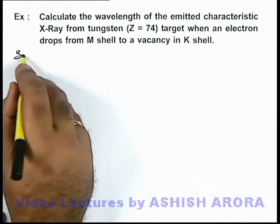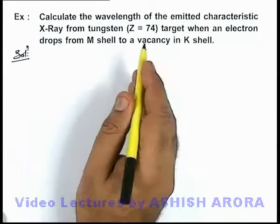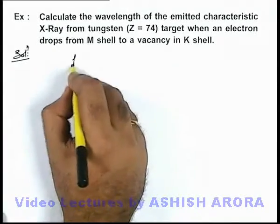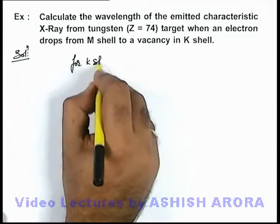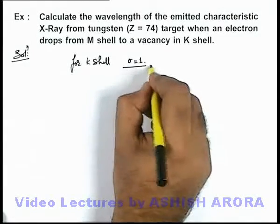So if we wish to calculate the wavelength of the characteristic X-rays, we can calculate by the modified Rydberg formula. And we know that for K shell, the value of screening constant can be taken as 1.